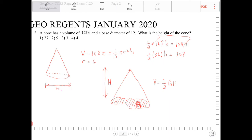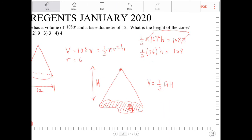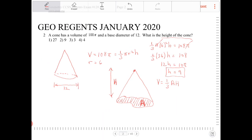And since 3 goes into 36 twelve times, and I know that 12 goes into 108 nine times, therefore h must equal 9, which is option 2.